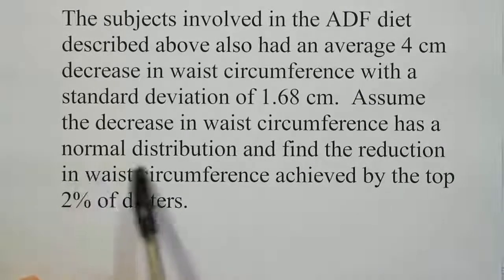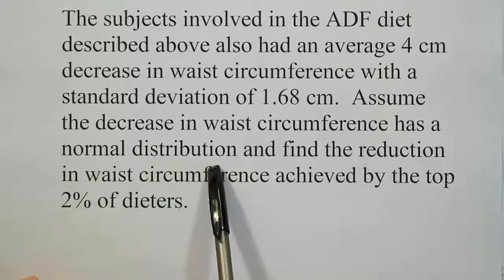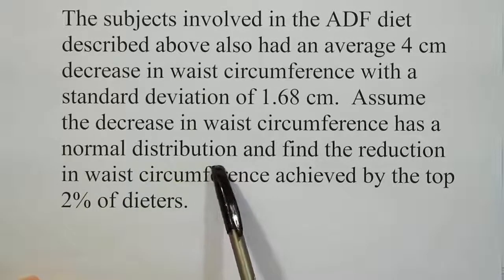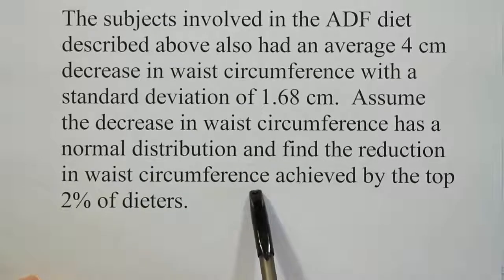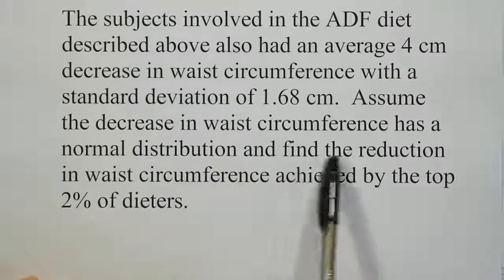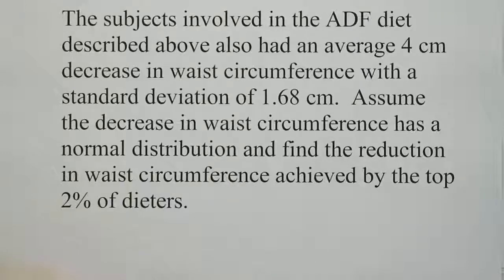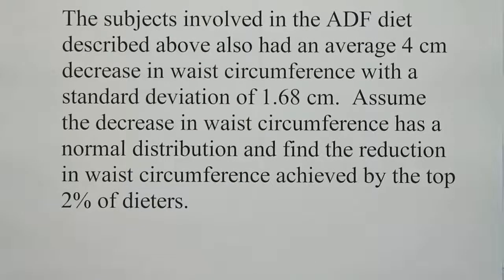So here we see this normal distribution. It tells us that we're working with a bell curve, but they're not asking for probability. Instead they want us to find the reduction in waist circumference. Whenever they say that it's bell-shaped but we're not looking for probability, we're going to use the inverse norm approach in our graphing calculator to do the problem. So let's go ahead and write down the information and draw a little picture to help us solve the problem.